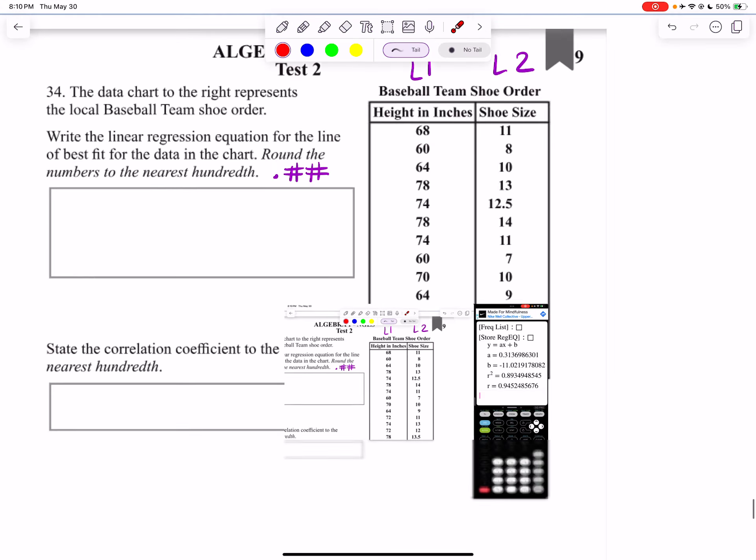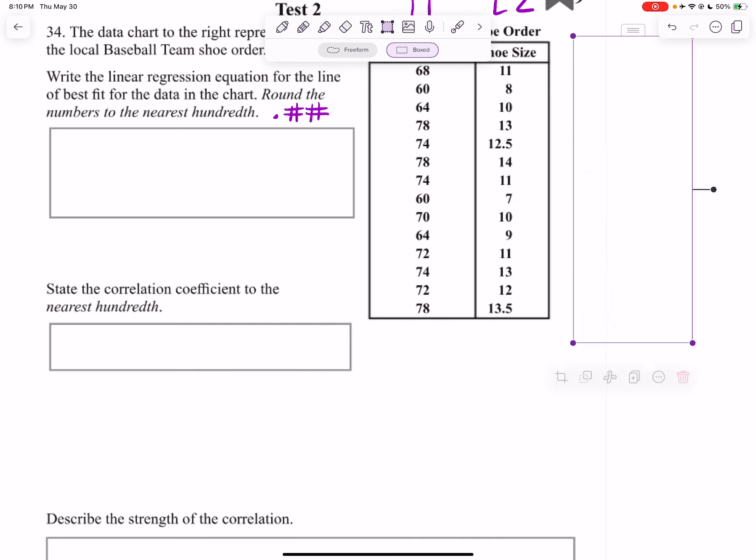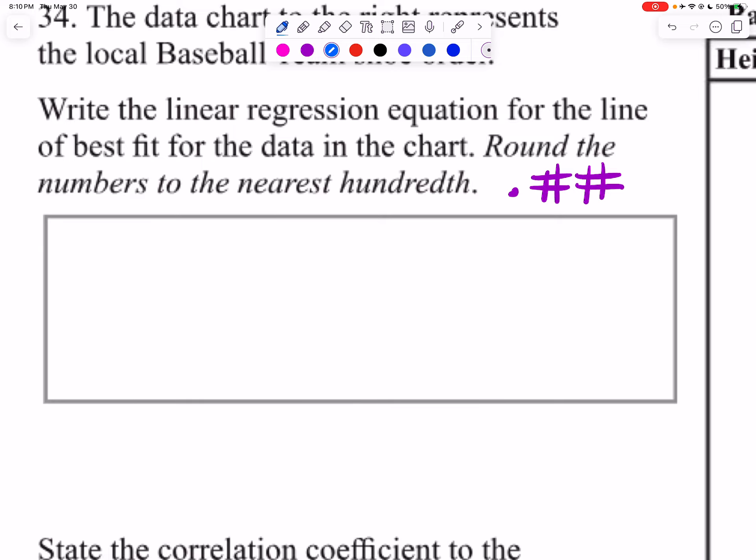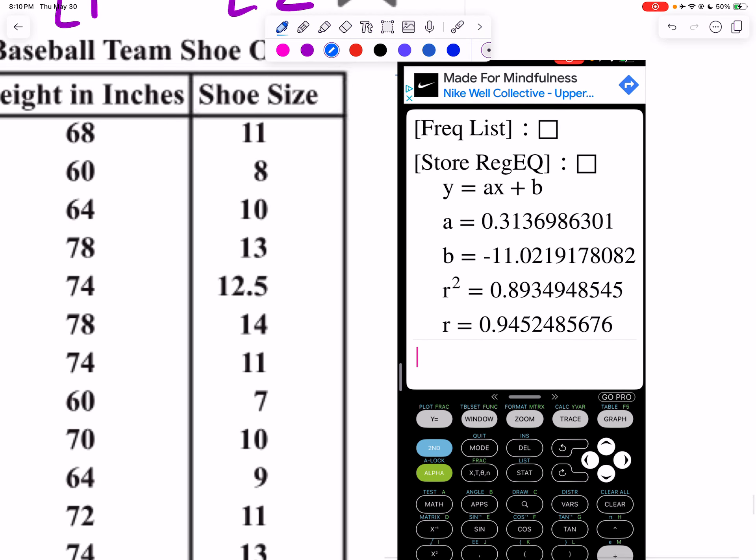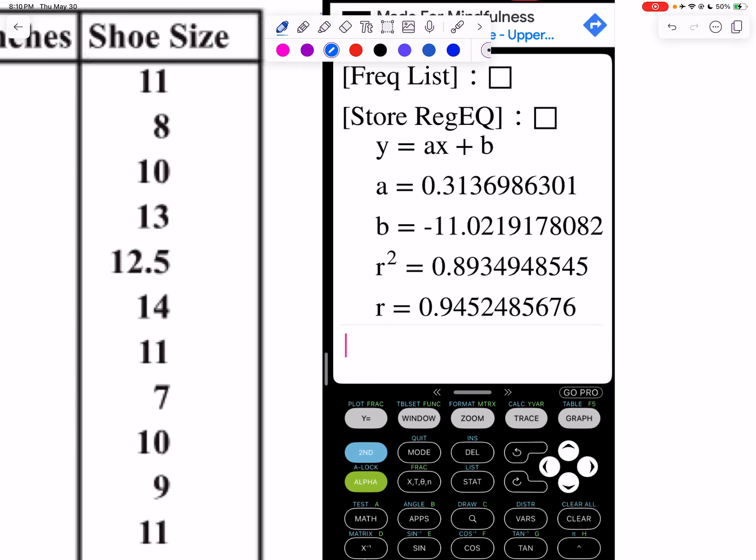So let's look at this information. So if we look at this problem, we want to write the linear regression equation. So the first thing I like to do is write down y equals ax plus b. And now I'm going to find my a value. So my a value is 0.31369. Nearest hundredth, I'm going to go two numbers after the decimal. If I look next door to my one, that three is smaller than five. So it's just going to stay 0.31.